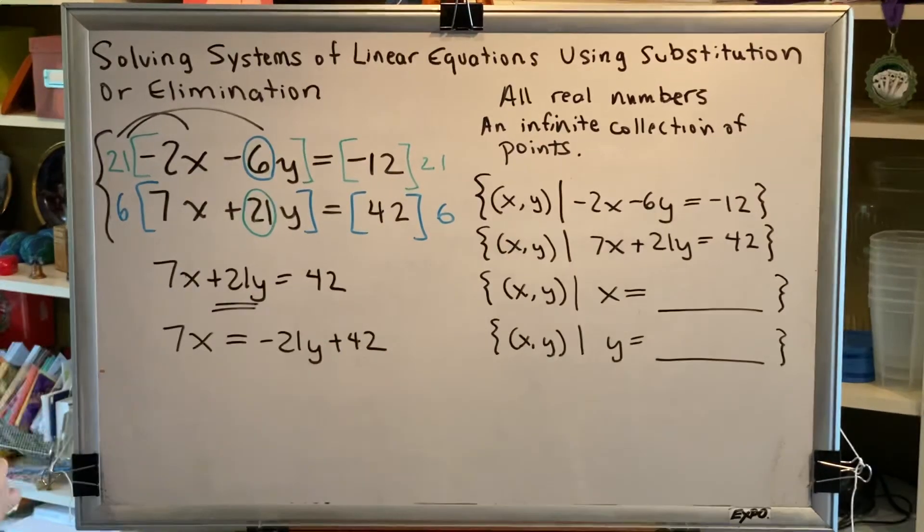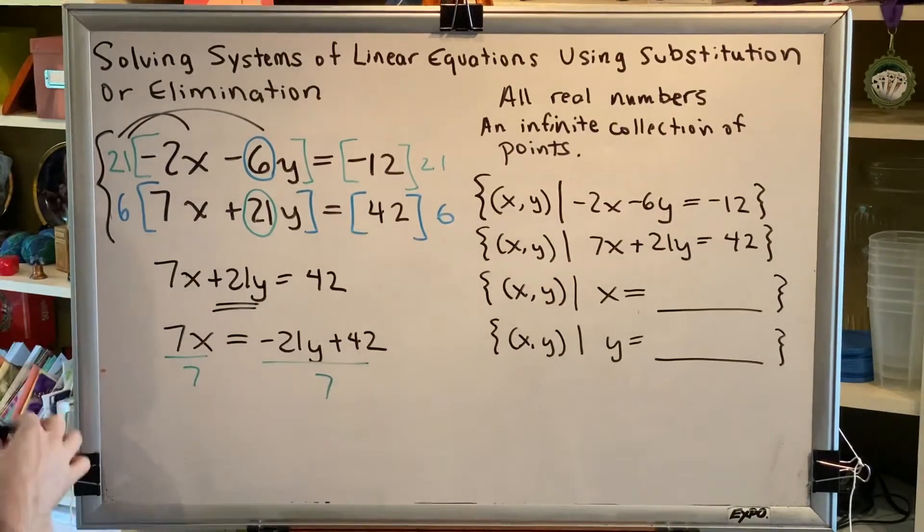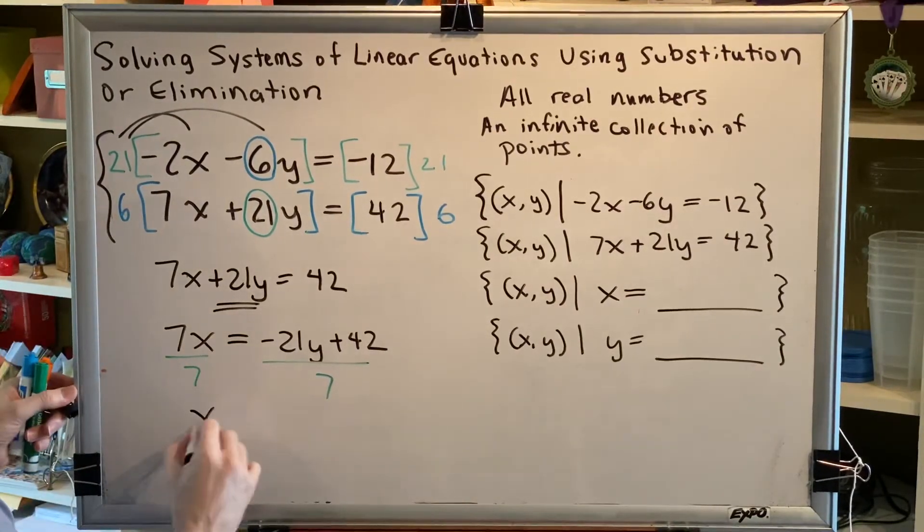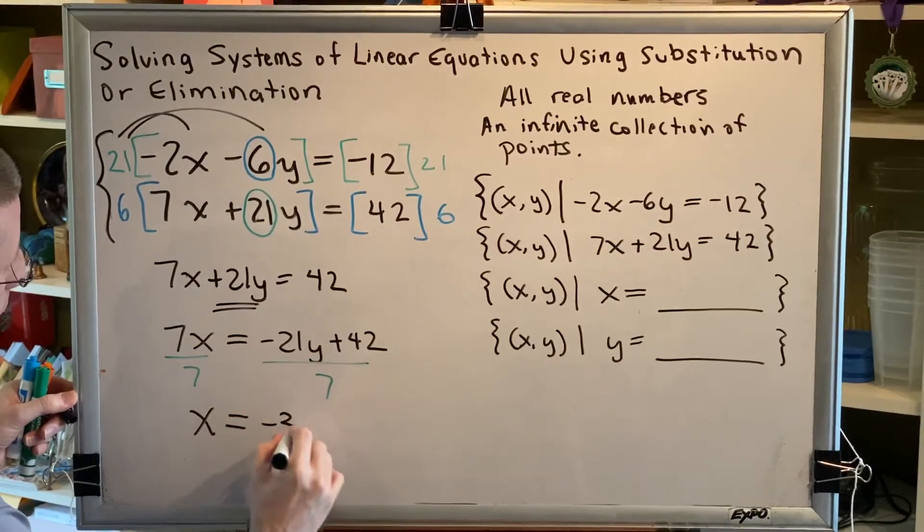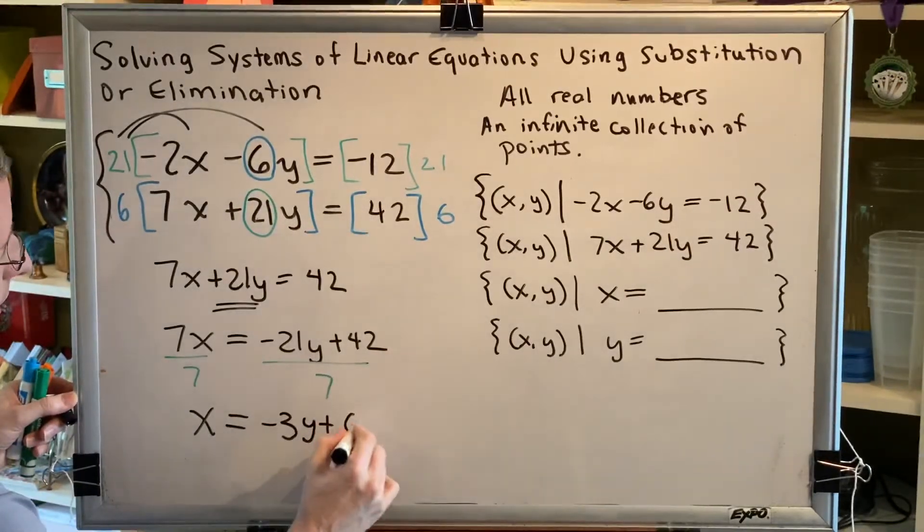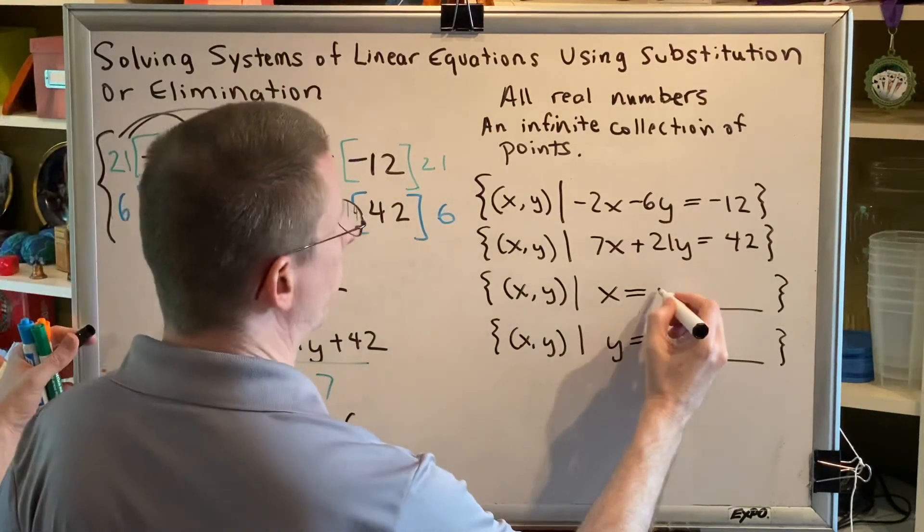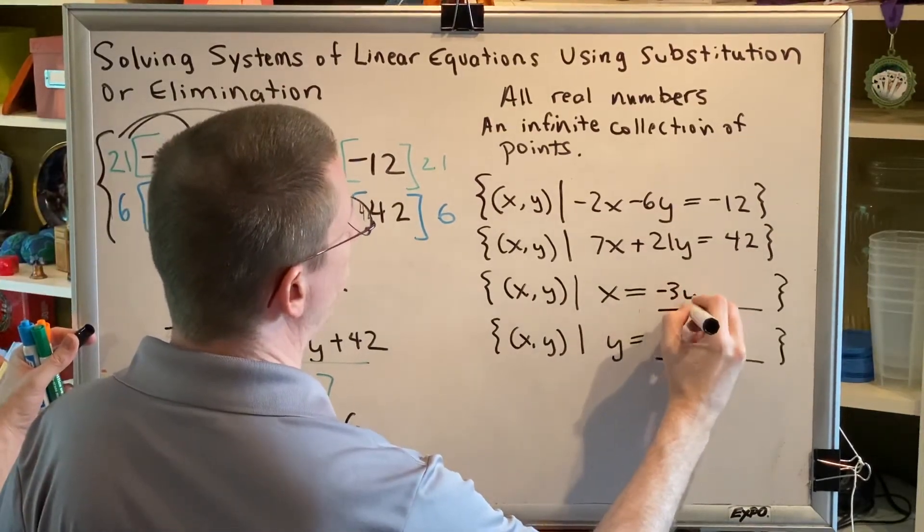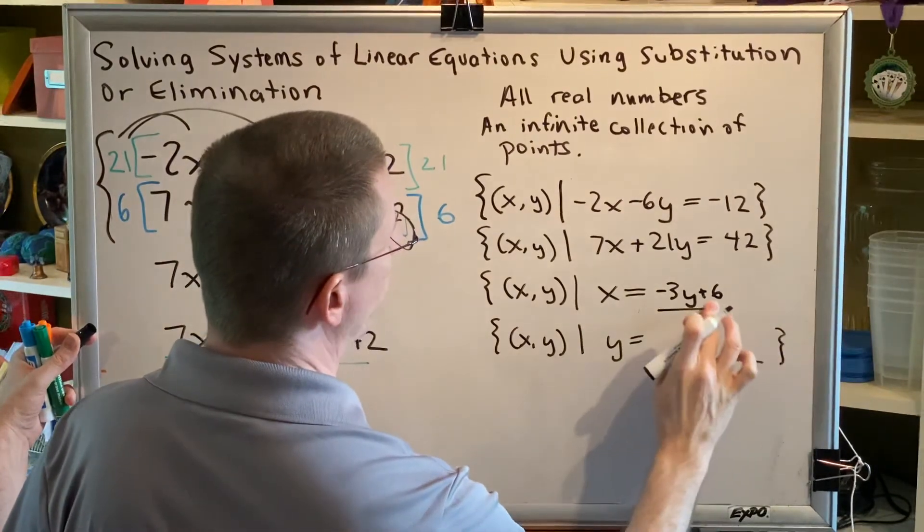Now divide both sides by 7 and simplify. You would get x equals negative 21 divided by 7 is negative 3y plus 42 divided by 7 is 6. x equals negative 3y plus 6. So we can put negative 3y plus 6. And we would have to specify here that y is a real number.